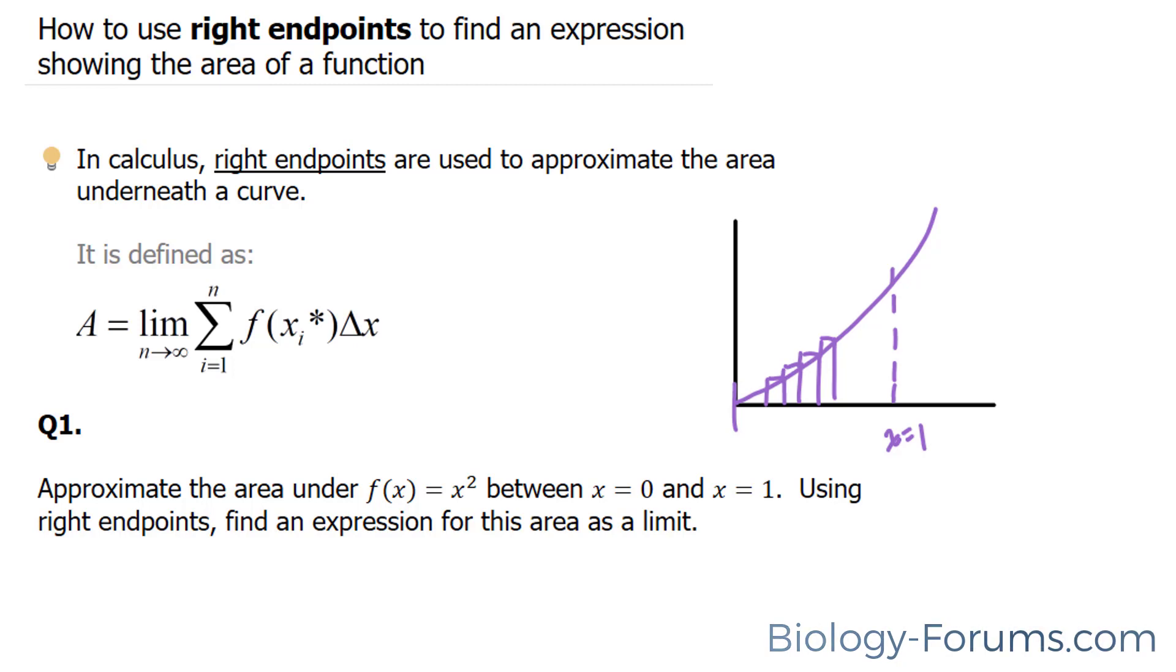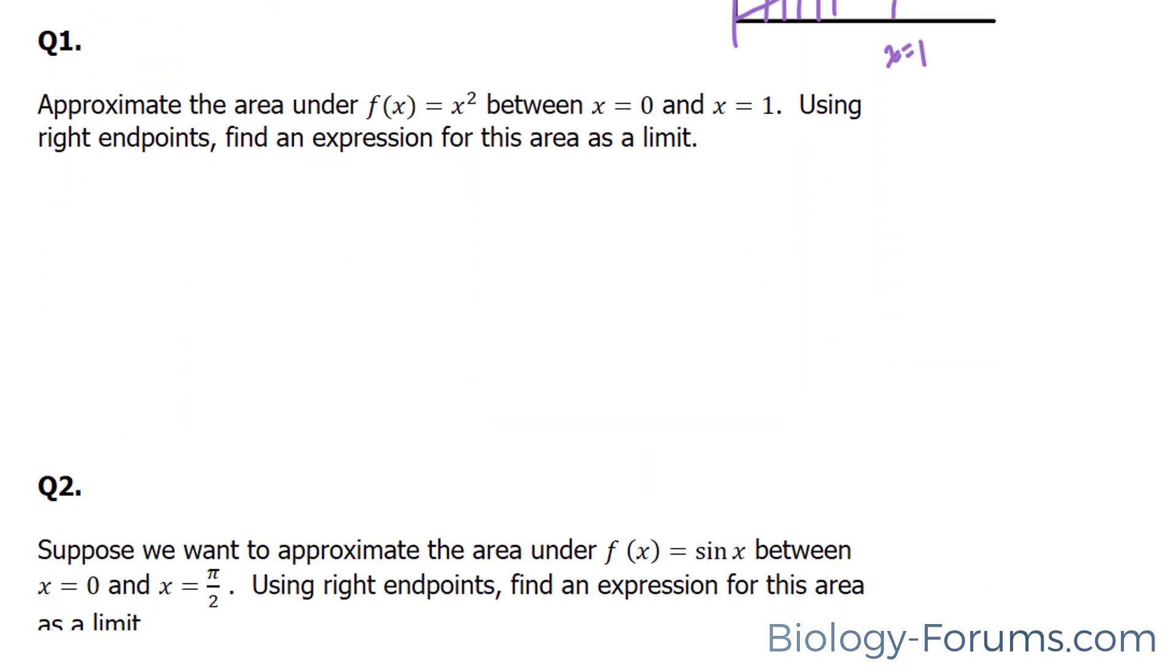So let's do a few examples. Start with question number 1. In question number 1, they ask us to approximate the area of f(x) = x² between x = 0 and x = 1. Using the right endpoints, find an expression for this area as a limit. So all we're asked is to find an expression. Let's do that.